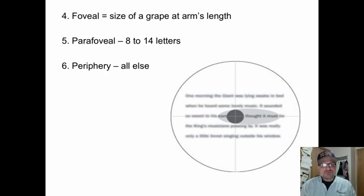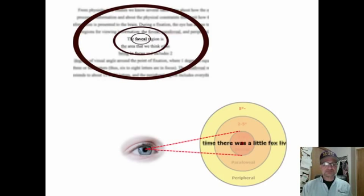Parafoveal is about 8 to 14 letters, this is kind of fuzzy. And the peripheral is all else, that's real fuzzy. So when we read, we're moving just that foveal across. Here's another example of it. We're reading, this is all fuzzy, and this is all really fuzzy.